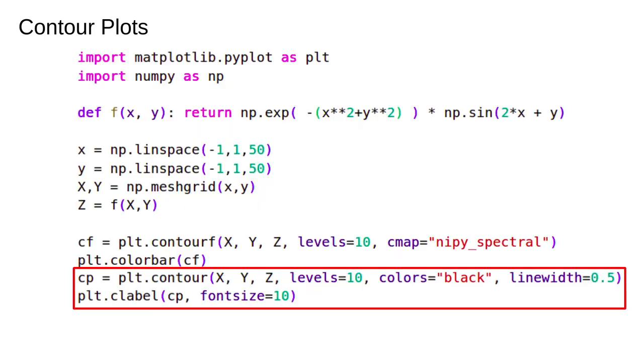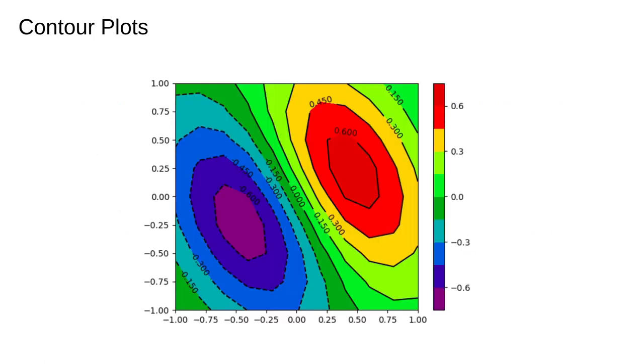We can add some more nice features to the contour plot. The contour function draws contour lines like you would see in a terrain map and the clabel function annotates the contours to give us the numeric values corresponding to each line. This is the result of the code on the previous page. Note the dashed lines indicate negative values.